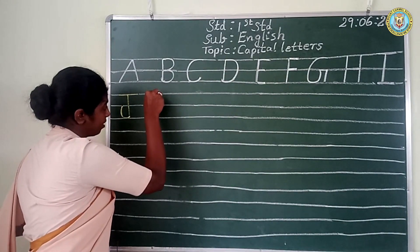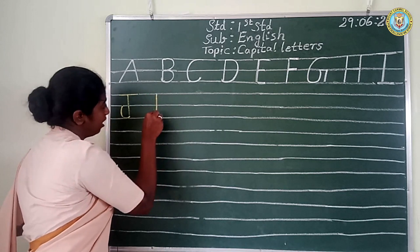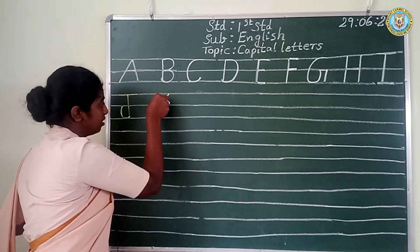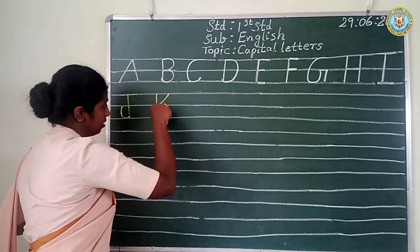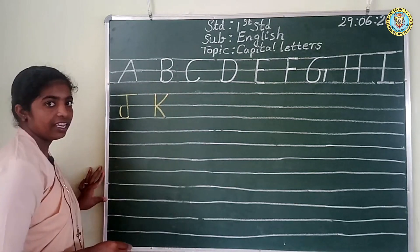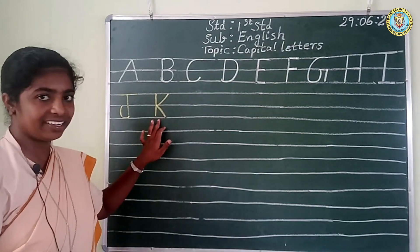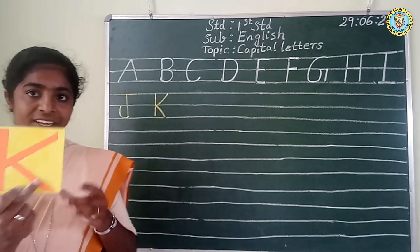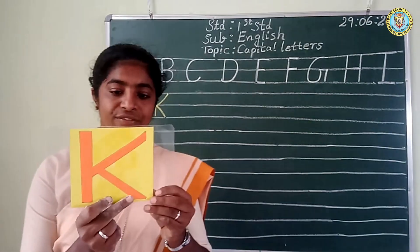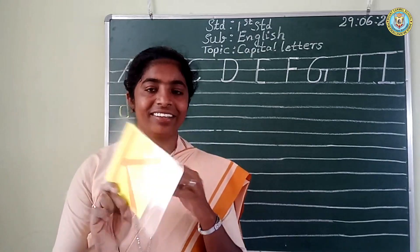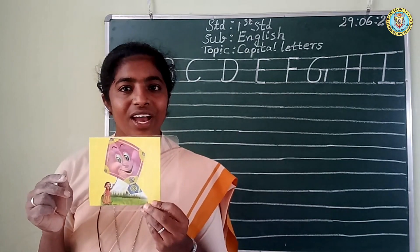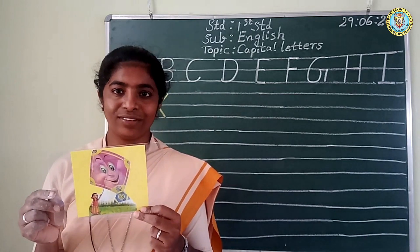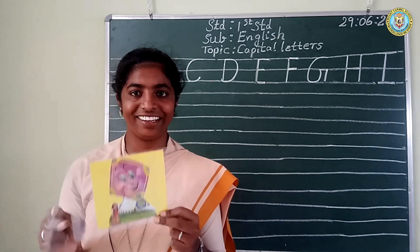K. Look at the board, children. Yes, this is K. Repeat after me. K. K for kite. Kite. Have you all played with a kite? Yes, we all like to play with a kite.